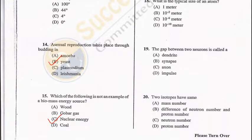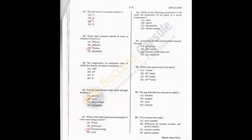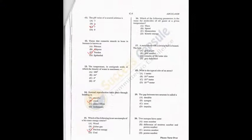Question 20: Two isotopes — if two atoms have the same number of protons but different number of neutrons, it is referred to as isotope — D is the answer. To recap: Q16 = D, Q17 = A, Q18 = D, Q19 = B (synapse).